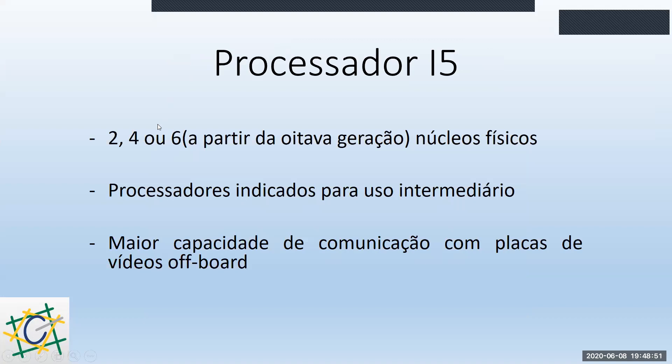Vamos passar para a segunda linha, que seriam os processadores i5. Lembrando que estamos falando de processadores da marca Intel — depois vamos falar sobre os da AMD. Esses processadores saíram com dois, quatro ou até seis núcleos; os seis núcleos vieram a partir da oitava geração. Além dos núcleos físicos, ele tem a tecnologia Hyper-Threading, que dobra os núcleos: se eu tenho quatro núcleos físicos, ele simula mais quatro núcleos lógicos, tendo oito threads disponíveis. São processadores indicados para uso mais intermediário — aquele usuário que pega programas mais pesados ou gosta de jogar games.